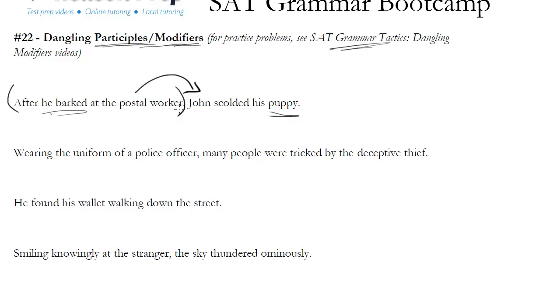After John barked at the postal worker, he scolded his puppy. That of course doesn't make sense from context, so one way to fix it would be to flip this and say the puppy was scolded by John. Now, that's not a great sounding sentence, so we might want to rearrange it in a different way, but that would be one way to fix it, because then our little modifier, or in this case our subordinate clause, would make it clear as to who's doing what.